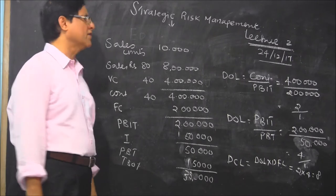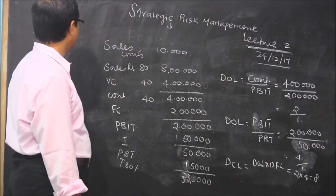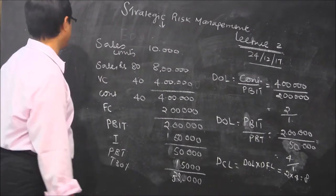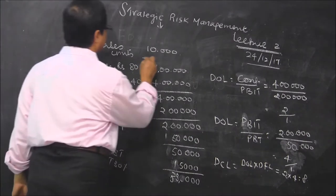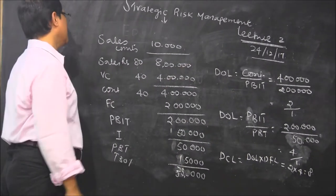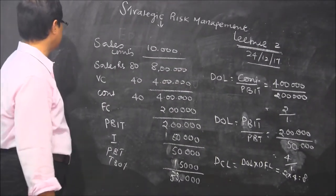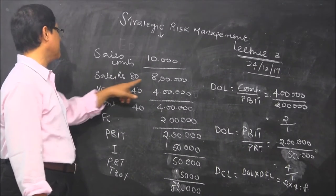Continuing in our lecture 2, let's take the income statement. Sales in units is 10,000, sales at 80 rupees is 8 lakhs.